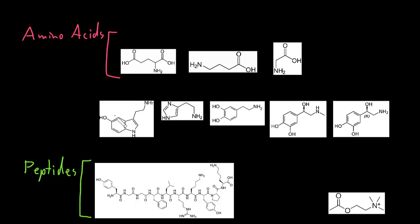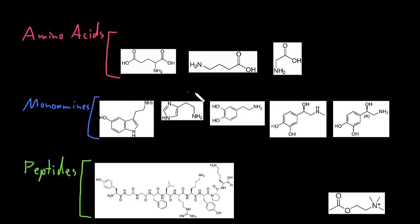The next big category is the monoamines — monoamine neurotransmitters. I've picked out five representative neurotransmitters for the monoamines. These are also sometimes called biogenic amines, so either monoamines or biogenic amines.